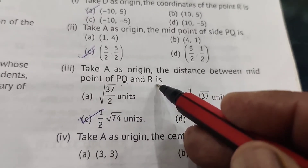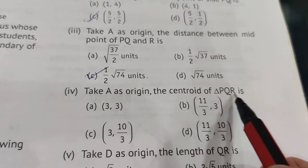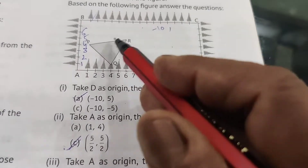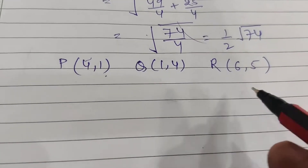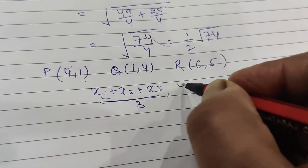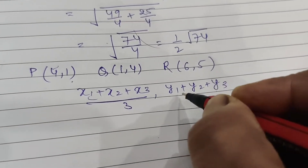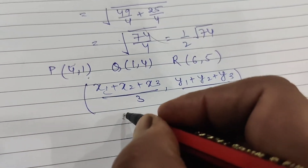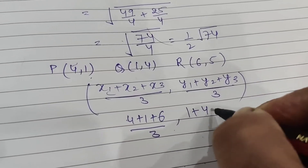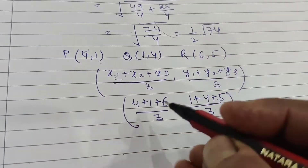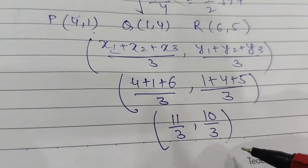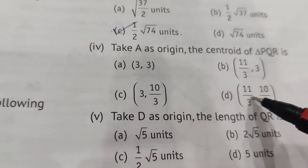This is the distance between the midpoint of PQ and R. Question 4: Take A as the origin. Find the centroid of triangle PQR. The coordinates are P(1, 4), Q(4, 1), and R(6, 5). The centroid formula is: (x1 plus x2 plus x3) by 3 and (y1 plus y2 plus y3) by 3. Calculating: (1 plus 4 plus 6) by 3 = 11/3, and (4 plus 1 plus 5) by 3 = 10/3. The coordinates of the centroid are (11/3, 10/3).